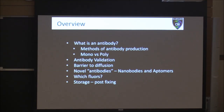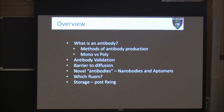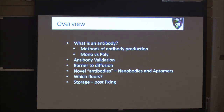Antibody validation is something that no one really thought about in the past but has now come to light as being very important. Then we'll talk about diffusion, because essentially immunolabeling all comes down to diffusion — those antibodies have to diffuse into your sample and find their epitope of interest. We'll cover barriers to that and some ways to get around it, including nanobodies and aptamers.